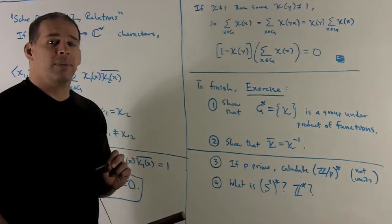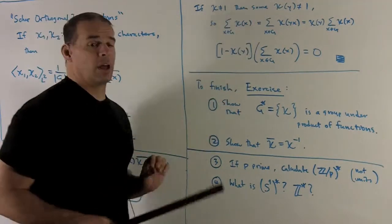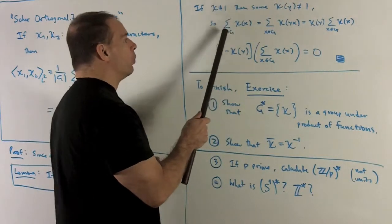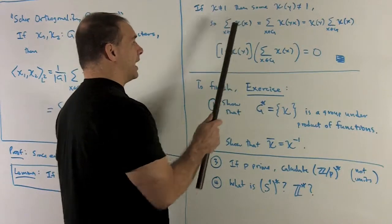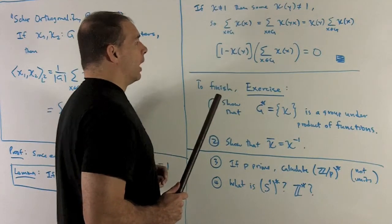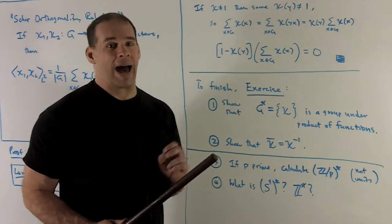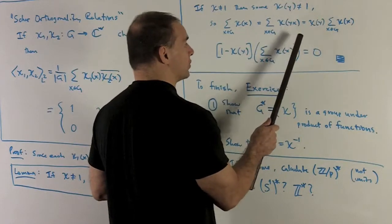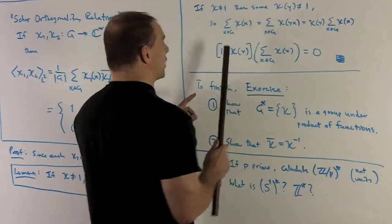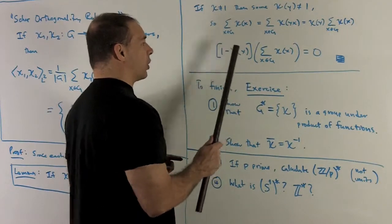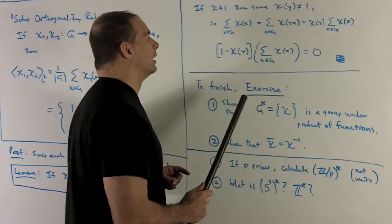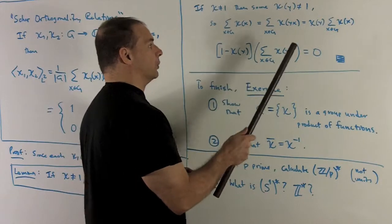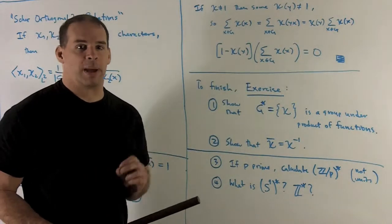For the second case, let's prove a slightly different result: if I have any character that's not exactly equal to one — not the trivial representation — then if I sum over all its values on group elements, I get zero. Since we don't have the trivial rep, we can find at least one point y where evaluating the character gives a non-trivial value. I sum the character over every element of the group; since this is a group, I can shift everything by y and get the same sum. Pulling y out by the homomorphism property, we get that one minus chi(y) times our original sum must be zero. Since chi(y) is not equal to one, the sum has to be zero. That proves the lemma.